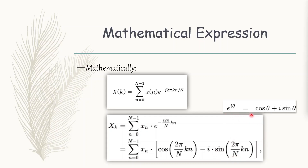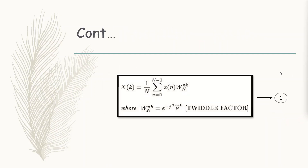Upon simplification, we get capital X of k equals 1 by N times summation of small x(n) times W_N to the power nk, where small n runs from 0 to capital N minus 1. Here W_N to the power nk is called the twiddle factor. Let this equation be equation 1, as we will be using it further in the coming slides. For the derivation of this, please check the link in the description as I am not going into depth here — I am simply brushing up on these things.